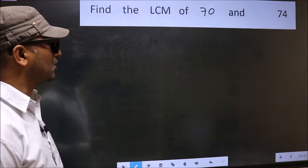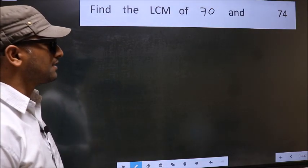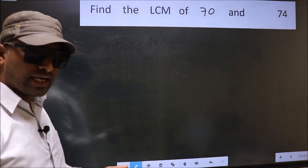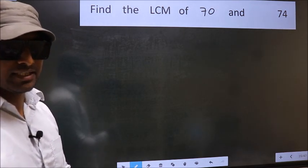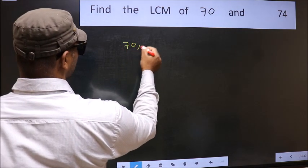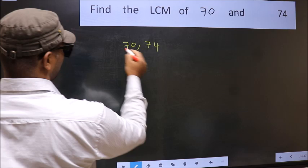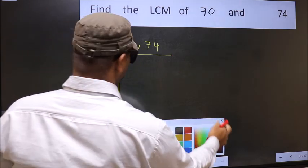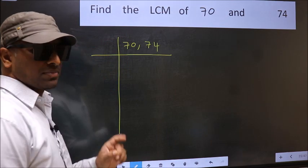Find the LCM of 70 and 74. To find the LCM, we should frame it in this way. 70, 74. This is your step 1.